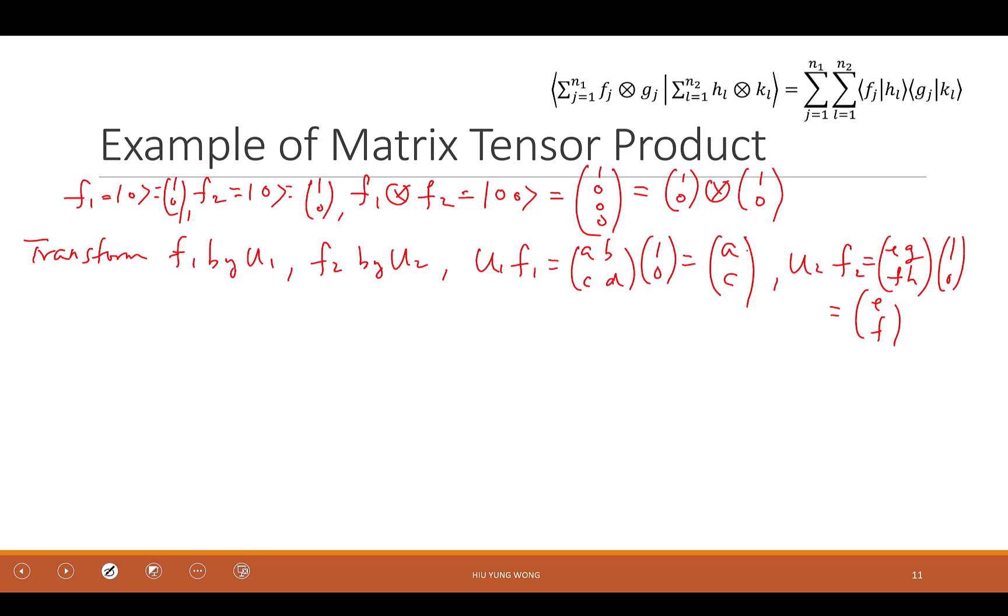Then what is the tensor product? U1 F1 tensor product U2 F2. I rotate them first and then look at it as a whole system. I do the tensor product. What is this? What is this? A, C, tensor product, EF. Which is equal to what? A, E, A, F, C, E, C, F, right?